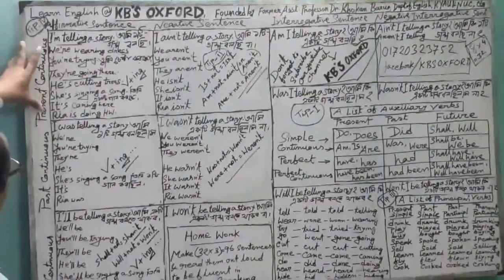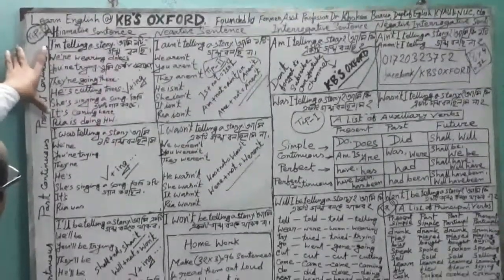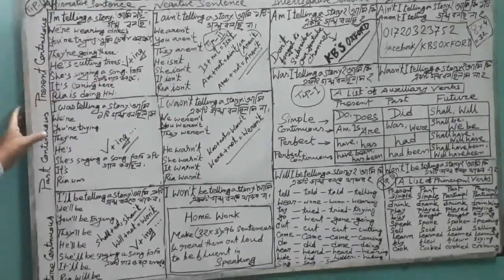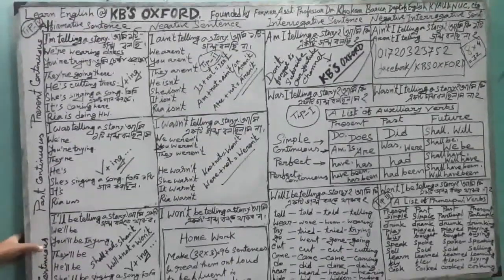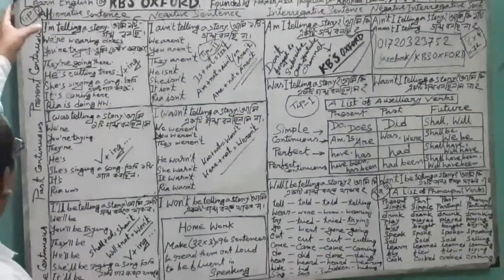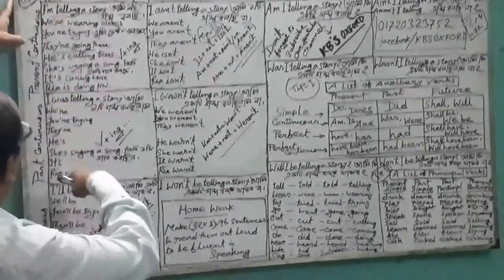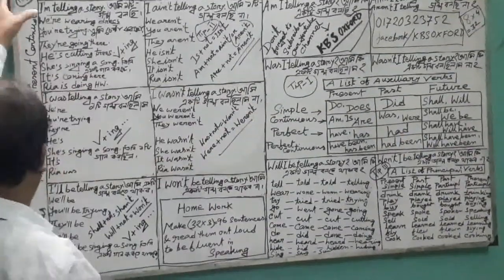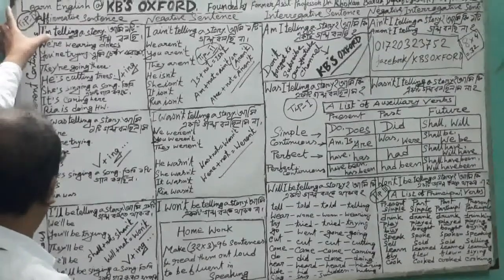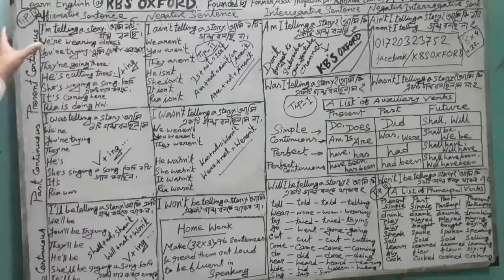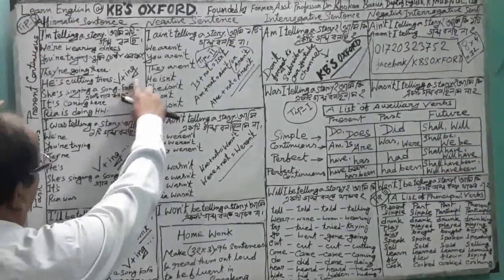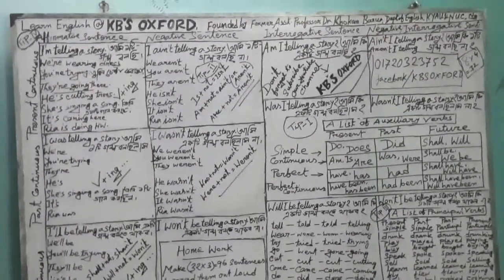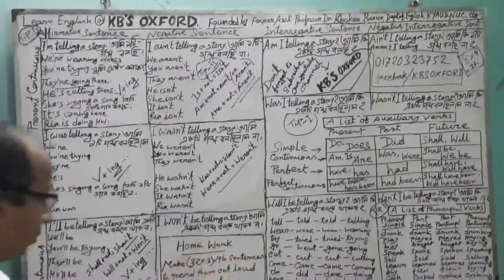After the subject, the respective auxiliary comes. For the present continuous, after 'I' we use 'am'; for others we use 'is' or 'are'. For the past continuous, we use 'was' or 'were'. Then comes the main verb with '-ing' added — that is V+ing, the present participle, or first participle form. I have used eight verbs as examples: tell, wear, try, go, carry, come, do, and sing.